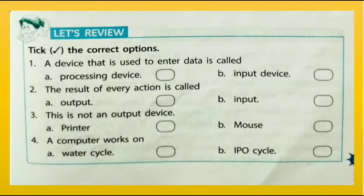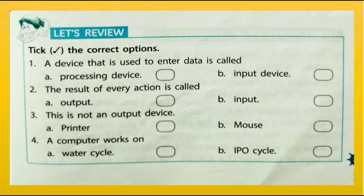Let's review — check the correct options. A device that is used to enter data is called an input device. The result of every action is called output. Mouse is not an output device. A computer works on the IPO cycle.